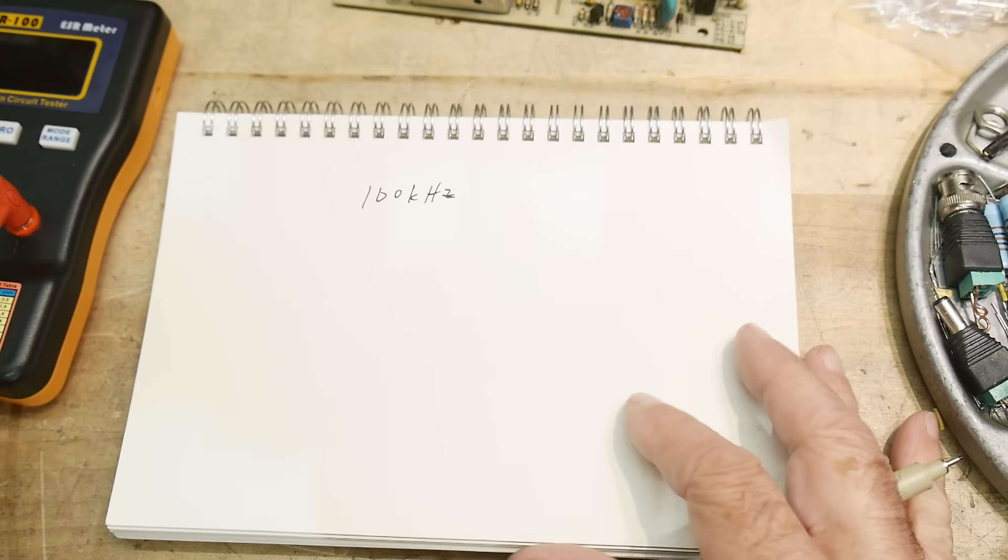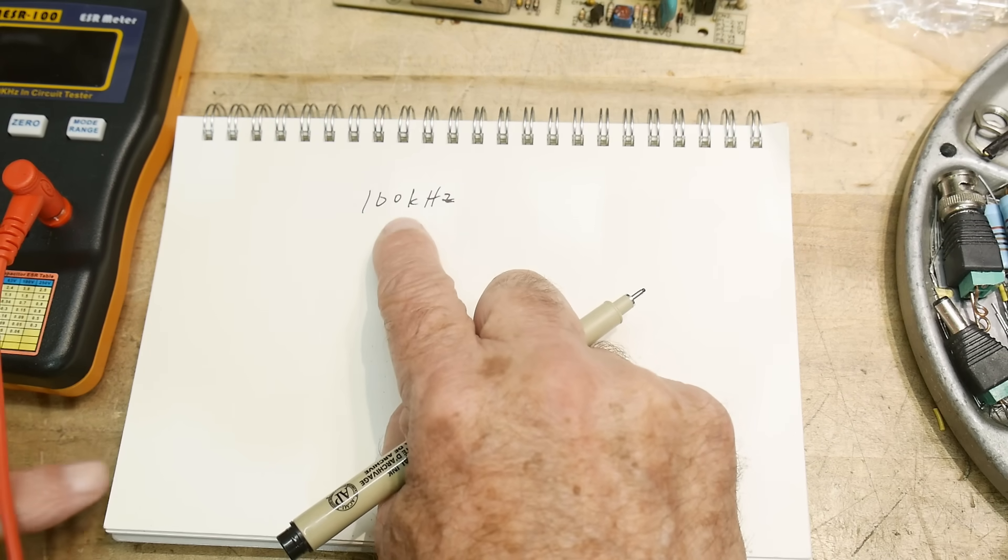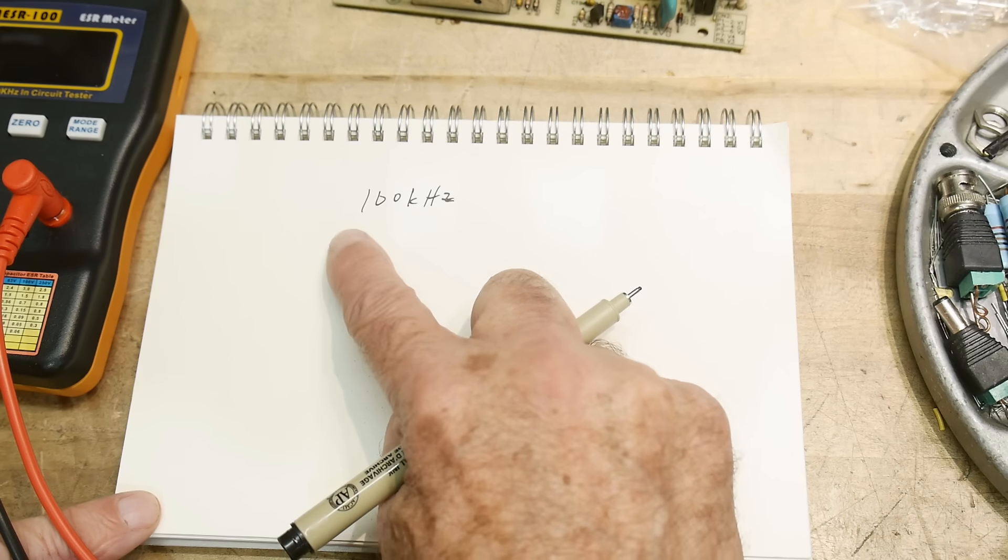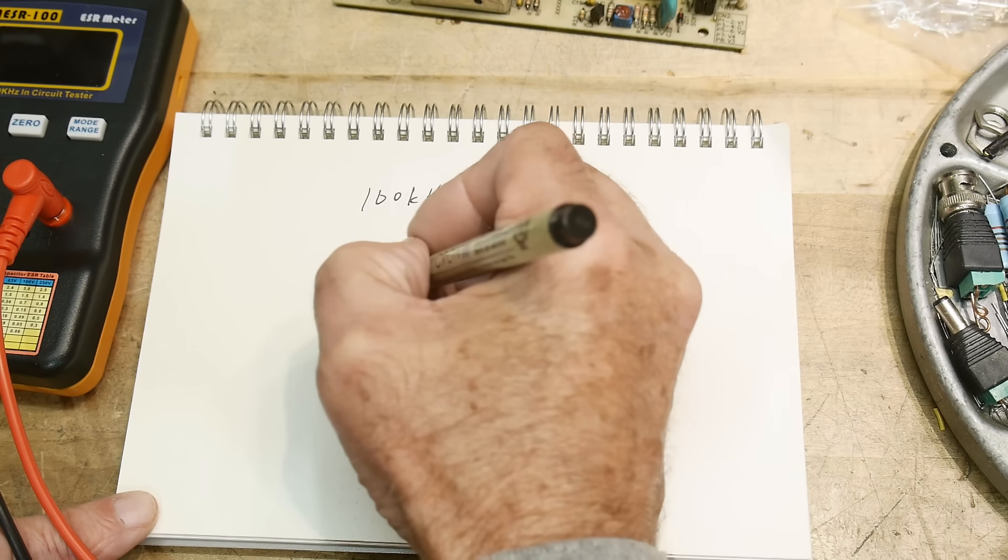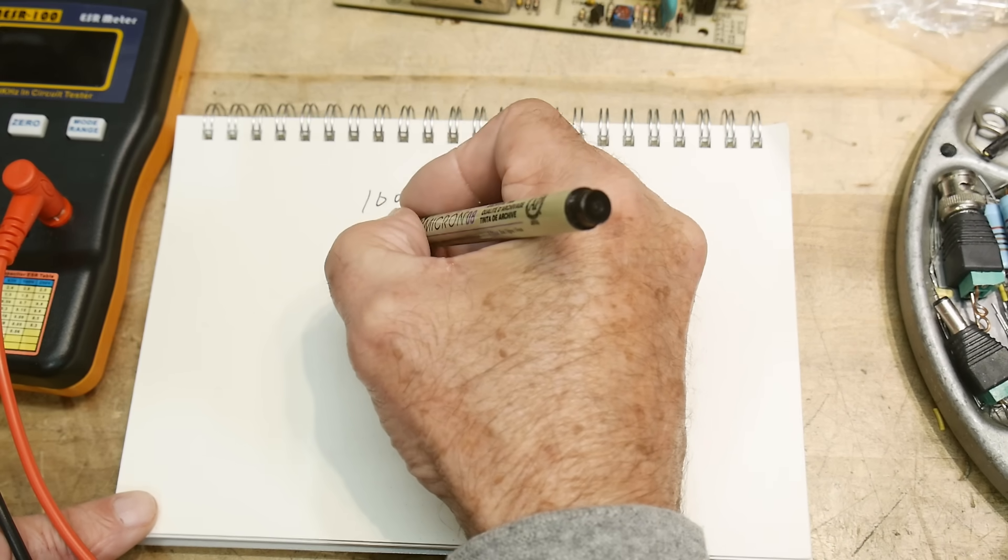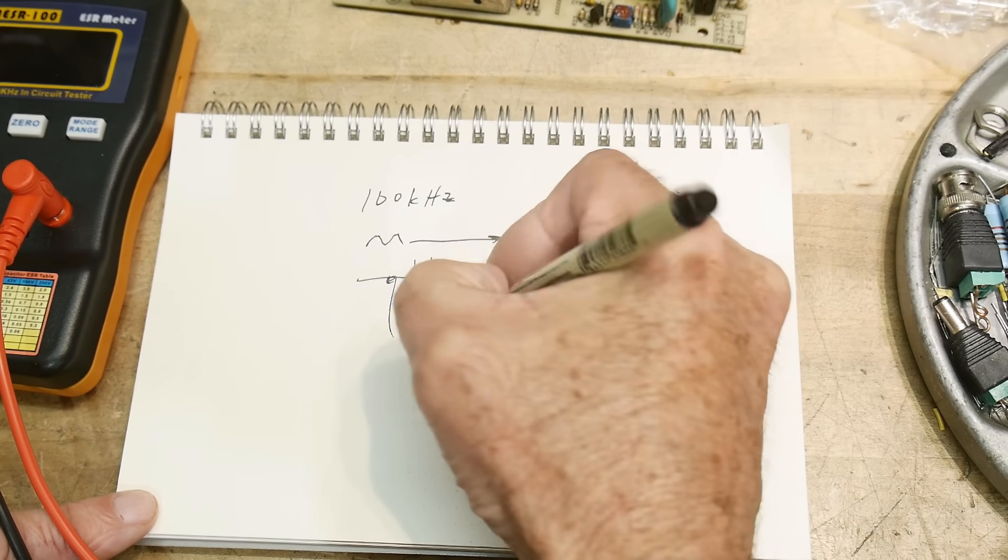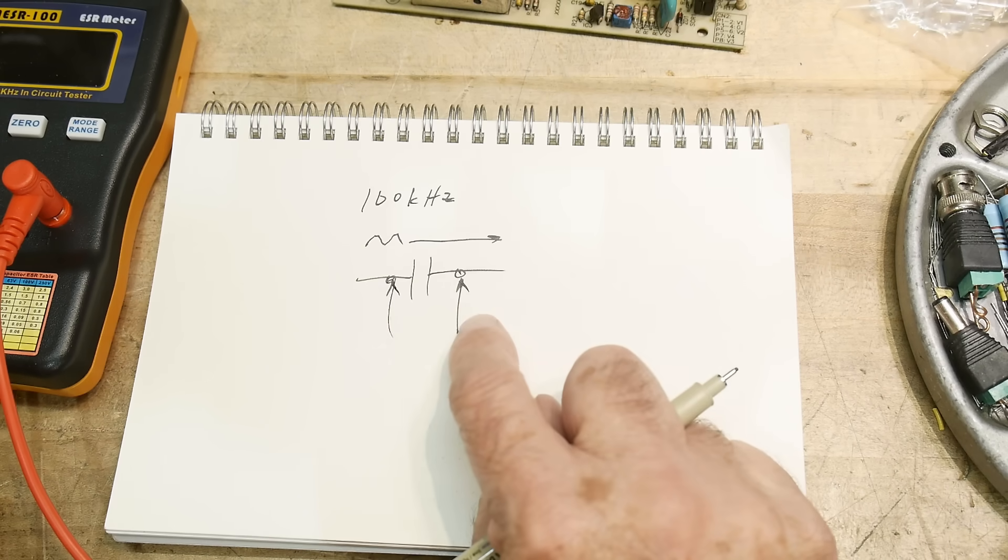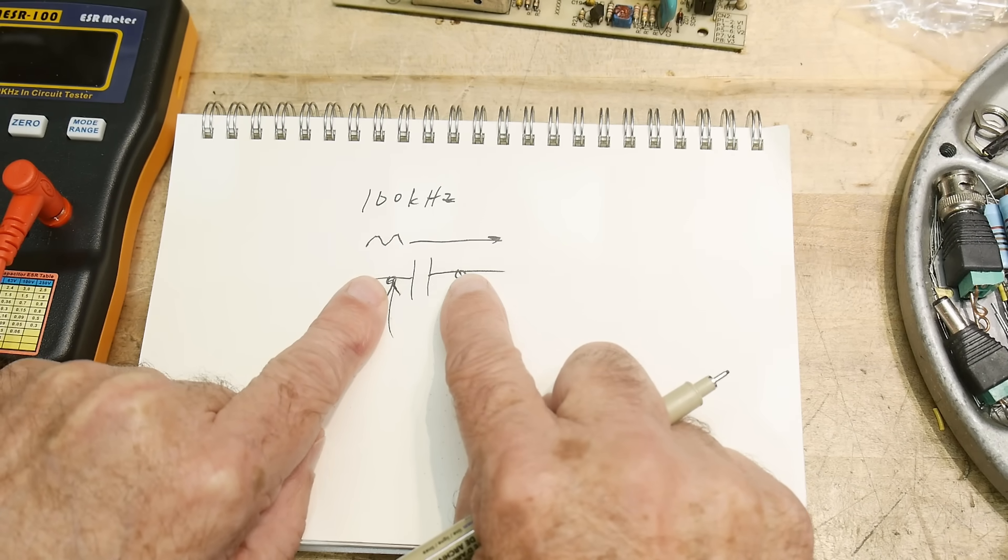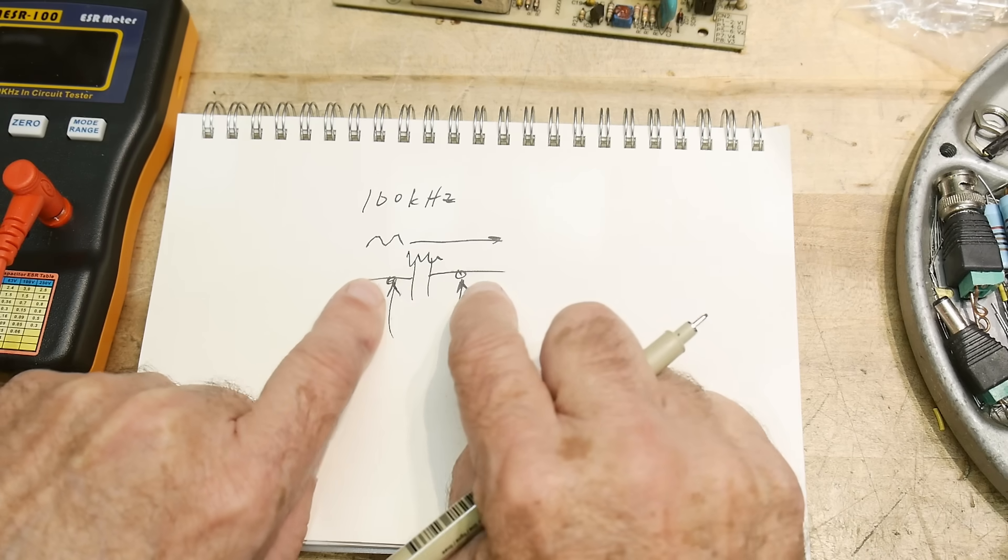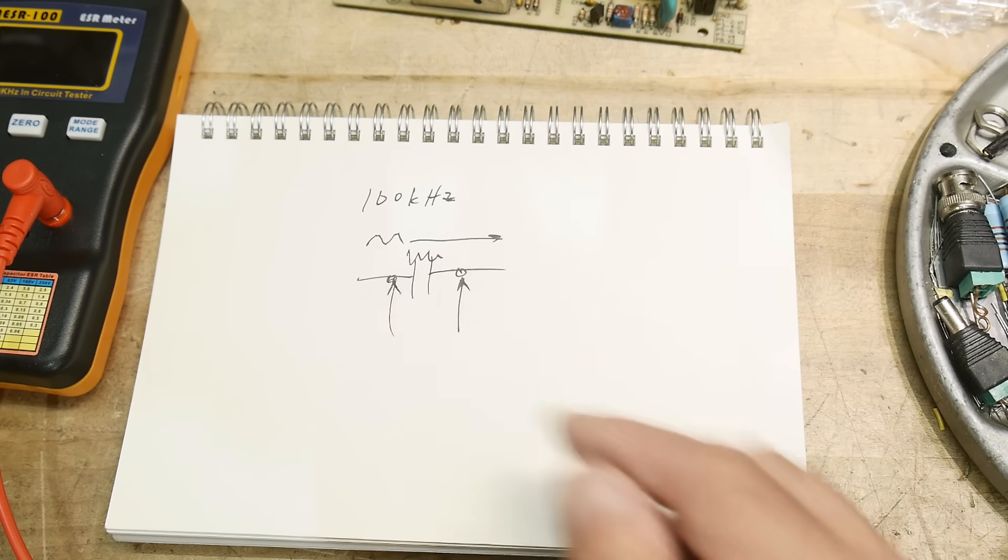So if you take a look at data sheets of capacitors and you look for ESR values, they'll say, oh, here's the ESR at 100 kilohertz. So at 100 kilohertz, the voltage, this AC voltage should go right through the capacitor. If you sort of look at the signal on either side of the capacitor, if it just goes flying through here, you'll see the same thing on both sides. If there's a resistor here, you can build up a differential between the two sides and you can measure that differential.